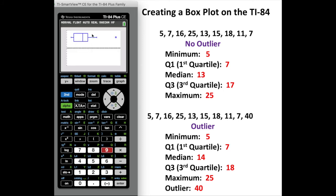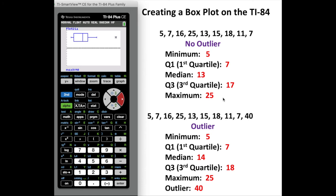The box plot is to the left here and it's clearly showing that outlier of 40. If I want to identify that number from the box plot graph I can hit trace — it'll automatically jump up to the median, and from there I can arrow left or right. Because of that outlier in the data it does change some of the values: the minimum remained five, Q1 still was seven, but the median is now 14, Q3 is now 18, the maximum number stays the same, and the outlier is 40. A nice way to visualize box plots on the TI-84 and find the five number summary.